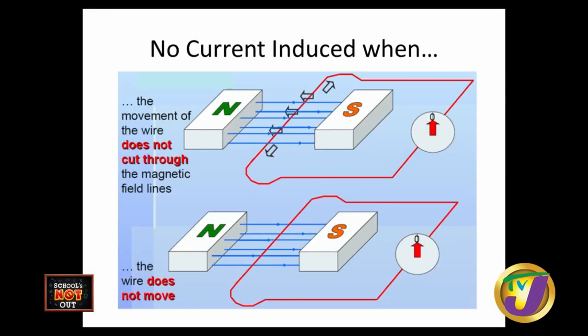You can have a situation where no induced current is generated. If the wire is moving parallel to the field — meaning the field is left to right and the wire is also moving left to right — no induced current is generated. And if there is no motion, then nothing happens. The only way to get an induced current is for the wire to move perpendicular to the magnetic field, whether up or down if the field is left to right.